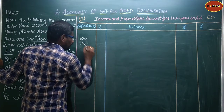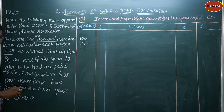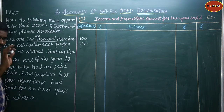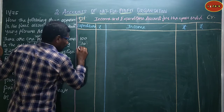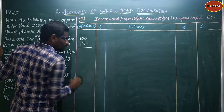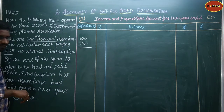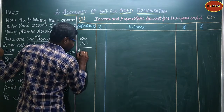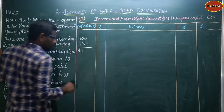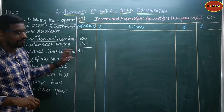Out of the hundred members, ten members have not paid their subscription. So the remaining 90 members have paid. 90 members paid.